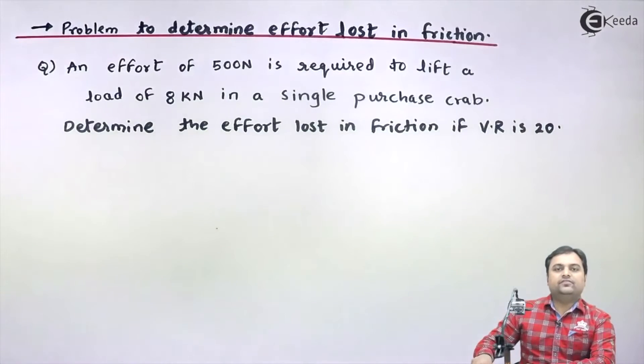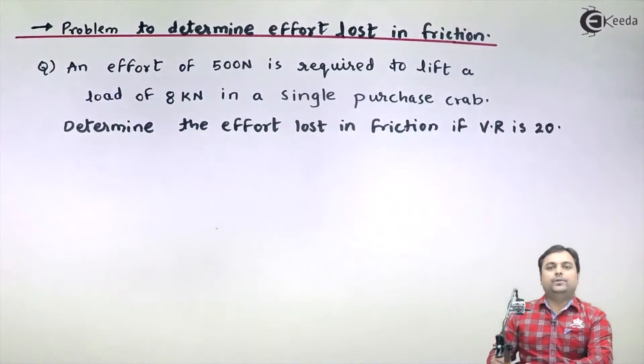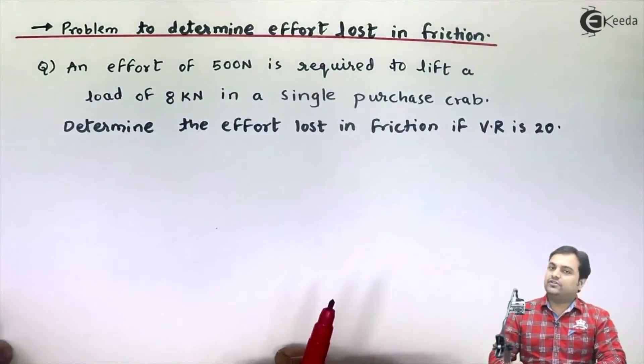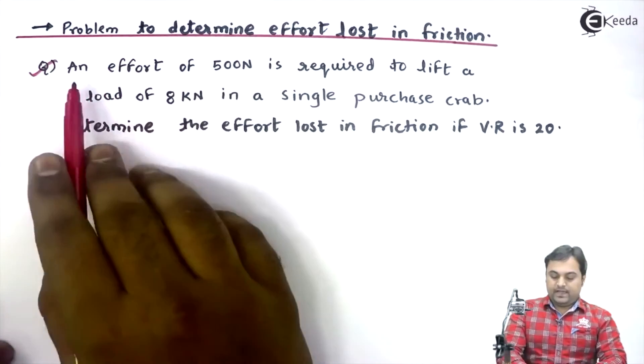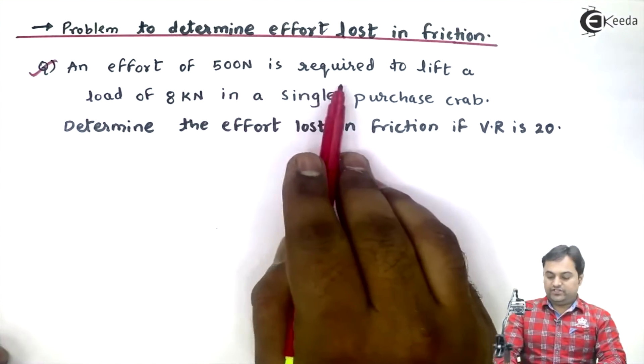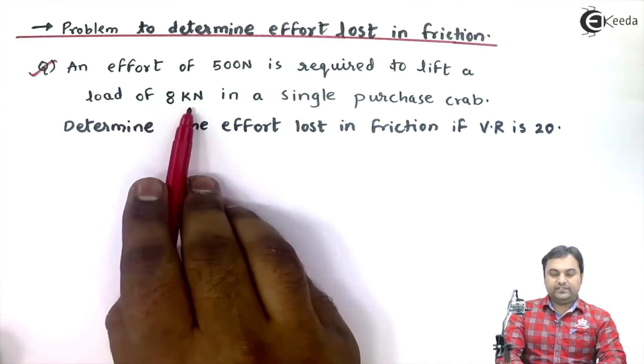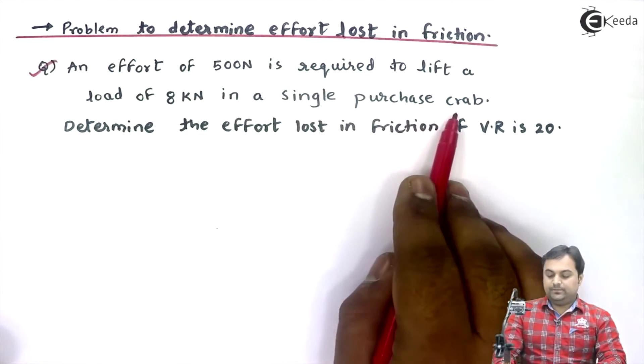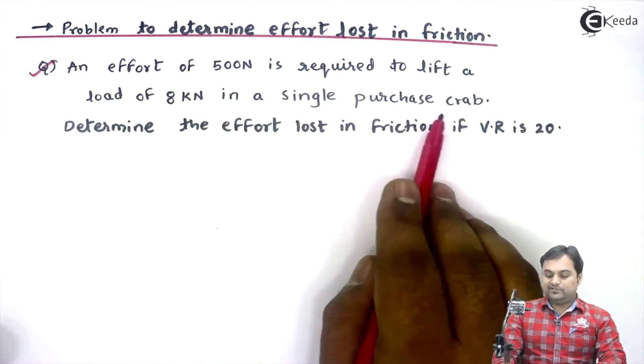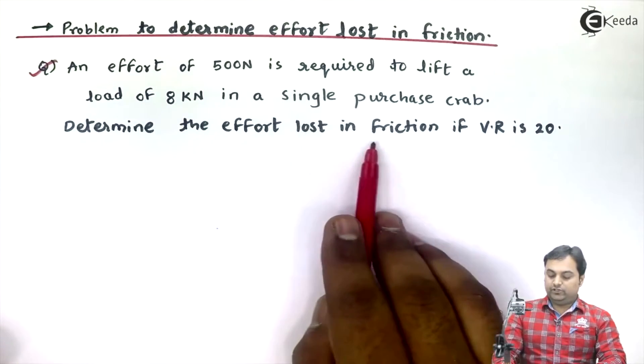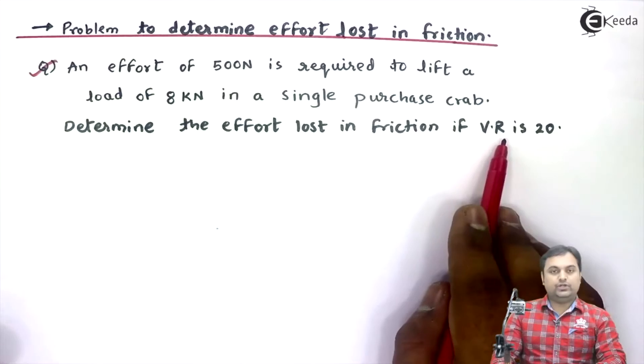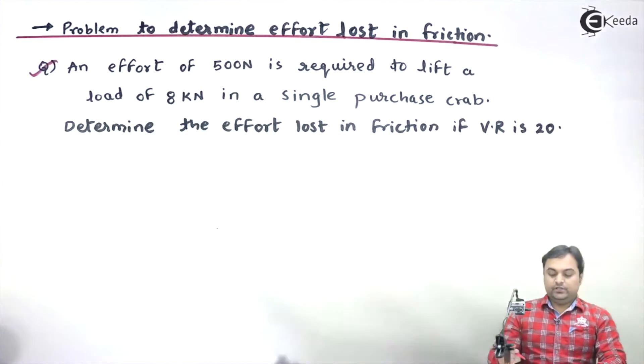Hello friends, in this video I will take a problem on effort lost in friction. Here we have a question: An effort of 500 Newton is required to lift a load of 8 kilonewton in a single purchase crab. Single purchase crab is a machine. Determine the effort lost in friction if the velocity ratio is 20.